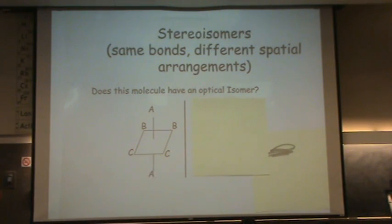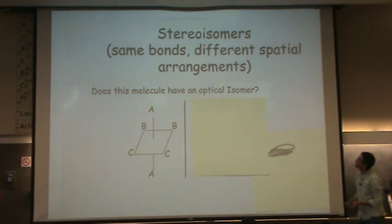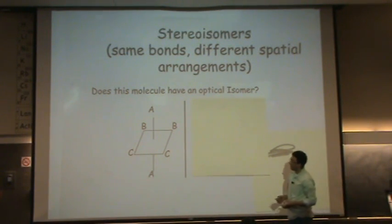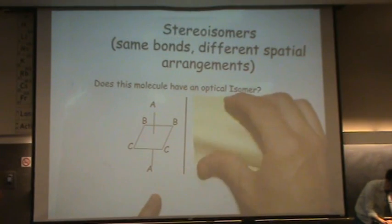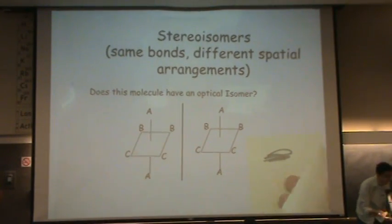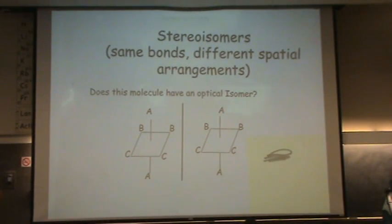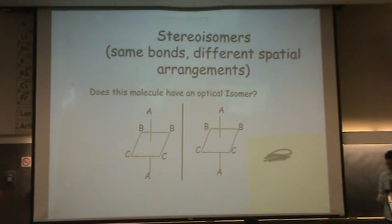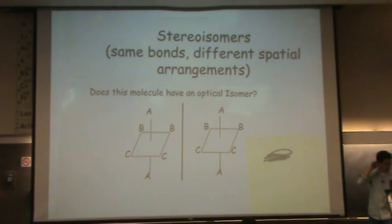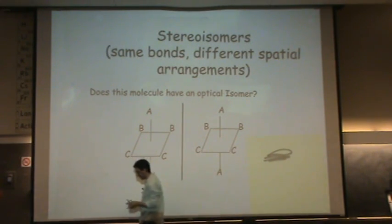You want to find out: does this have a mirror image? Well, it would have a mirror image, but is this mirror image identical or different? If you want to see what the mirror image is, look up now. So there's the mirror image. And now you want to find out, is this thing chiral or not?